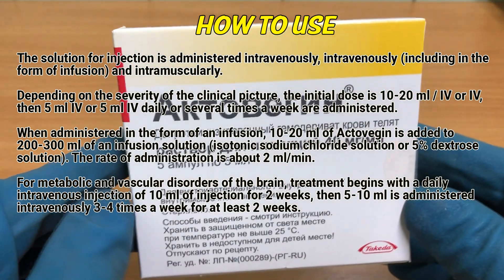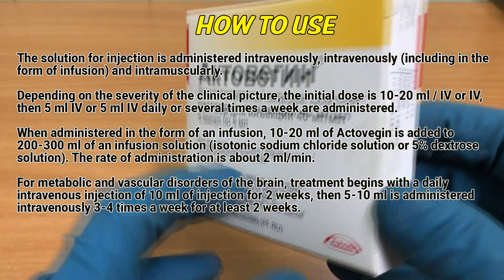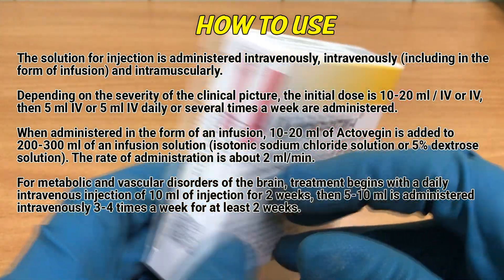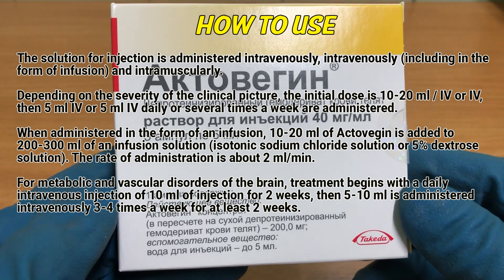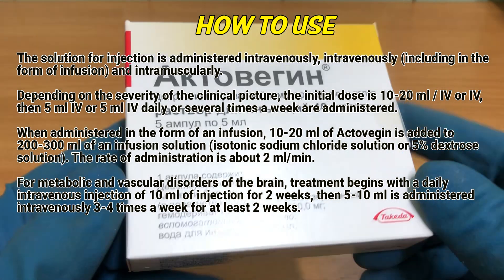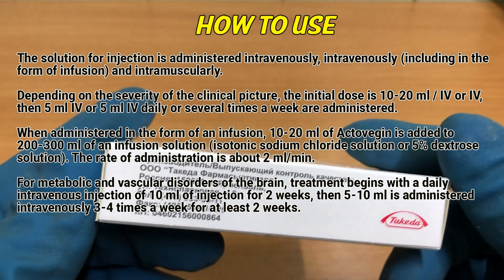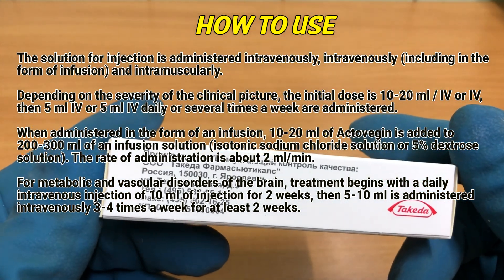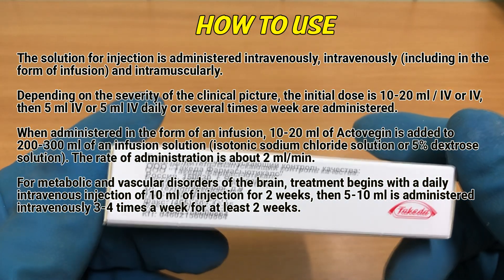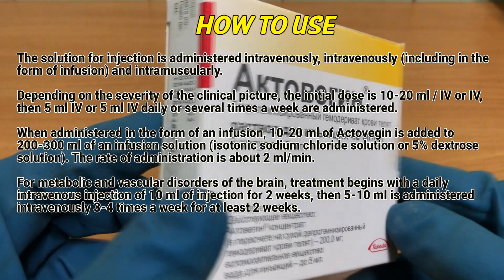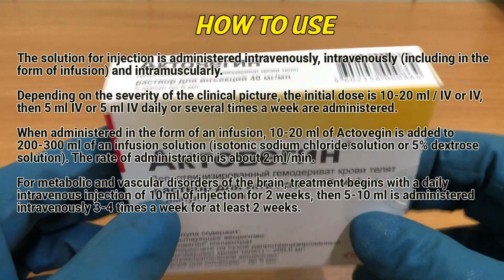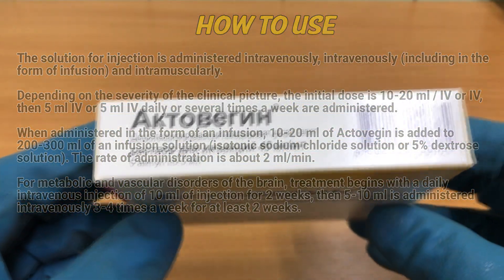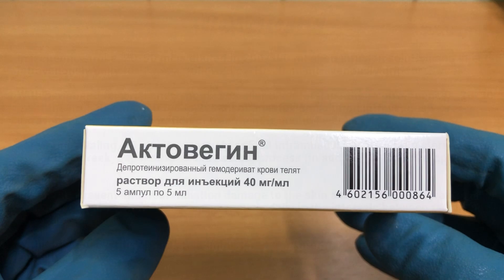The rate of administration is about 2 mL per minute. For metabolic and vascular disorders of the brain, treatment begins with a daily intravenous injection of 10 mL for 2 weeks, then 5 to 10 mL is administered intravenously 3 to 4 times a week for at least 2 weeks.